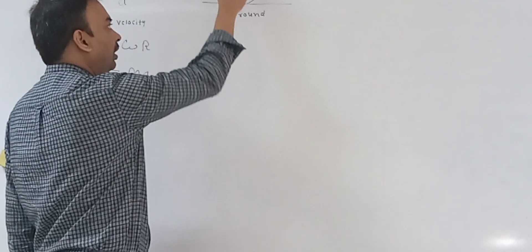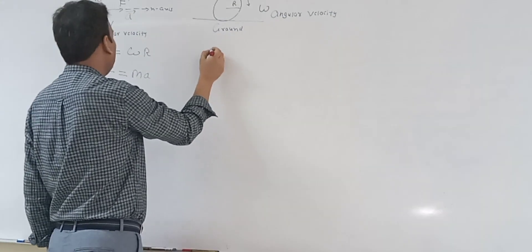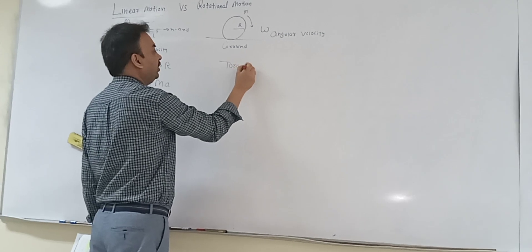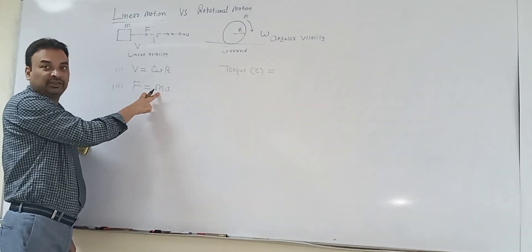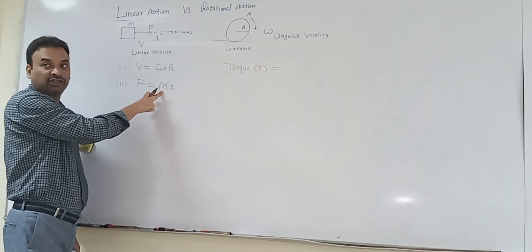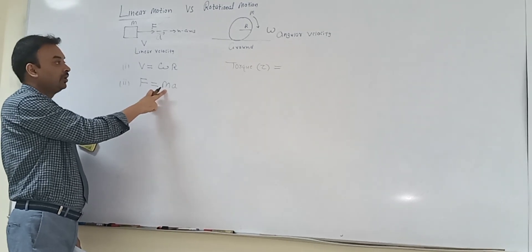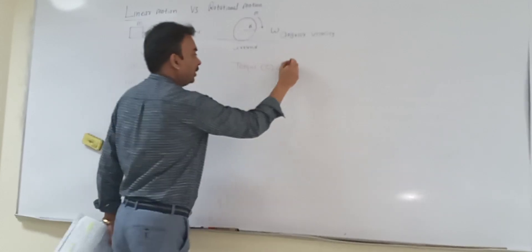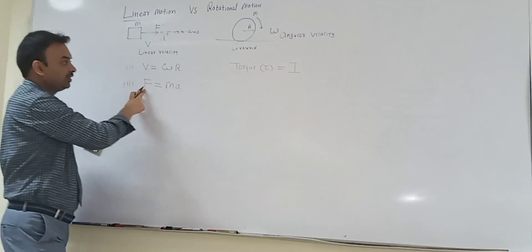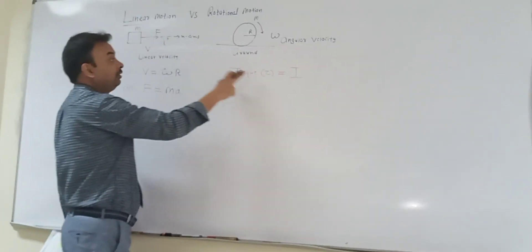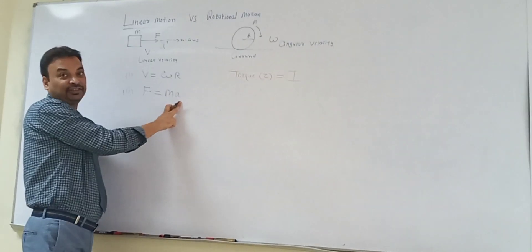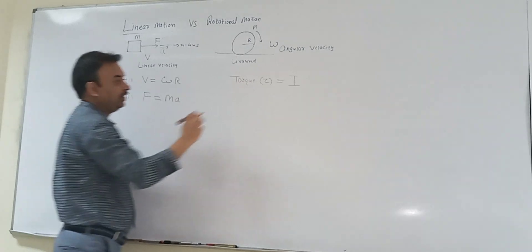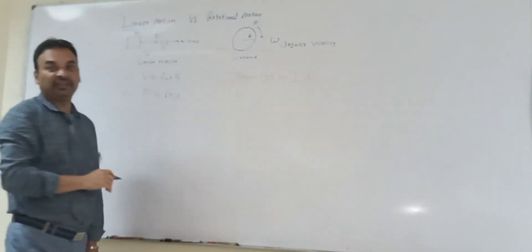In rotational motion, instead of applying a force we apply a torque, represented by tau. In rotational motion, force is replaced by torque, mass is replaced by moment of inertia I, and linear acceleration is replaced by angular acceleration alpha. So tau equals I times alpha.